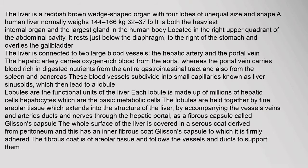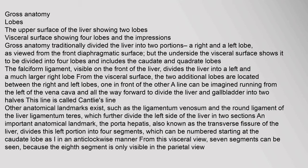The liver is a reddish-brown, wedge-shaped organ with four lobes of unequal size and shape. A human liver normally weighs 1.44 to 1.66 kg. Gross anatomy traditionally divided the liver into two portions — a right and a left lobe as viewed from the front (diaphragmatic surface). The underside, the visceral surface, shows it to be divided into four lobes and includes the caudate and quadrate lobes.